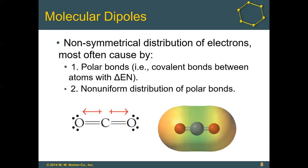Once you know whether the bonds are polar, think about the overall molecule. The molecule's shape determines in which direction those bond polarities point. If you have a non-symmetrical distribution of electrons, you have a molecular dipole — most often caused by polar bonds or a non-uniform distribution of polar bonds.